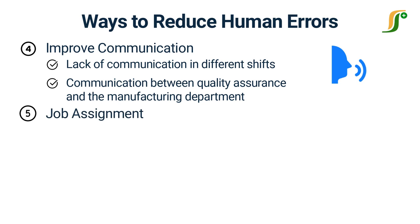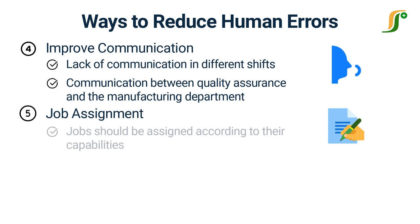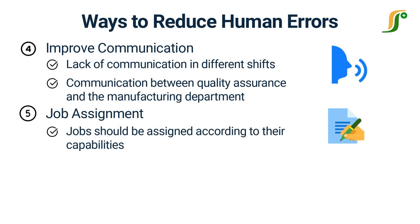Job assignment. The performance of the individual person should be monitored by the supervisor and jobs should be assigned according to their capabilities. It shall give a better result and the chances of human errors shall also be reduced. Every time you assign a job, find the person who fits best for the job for its successful completion.